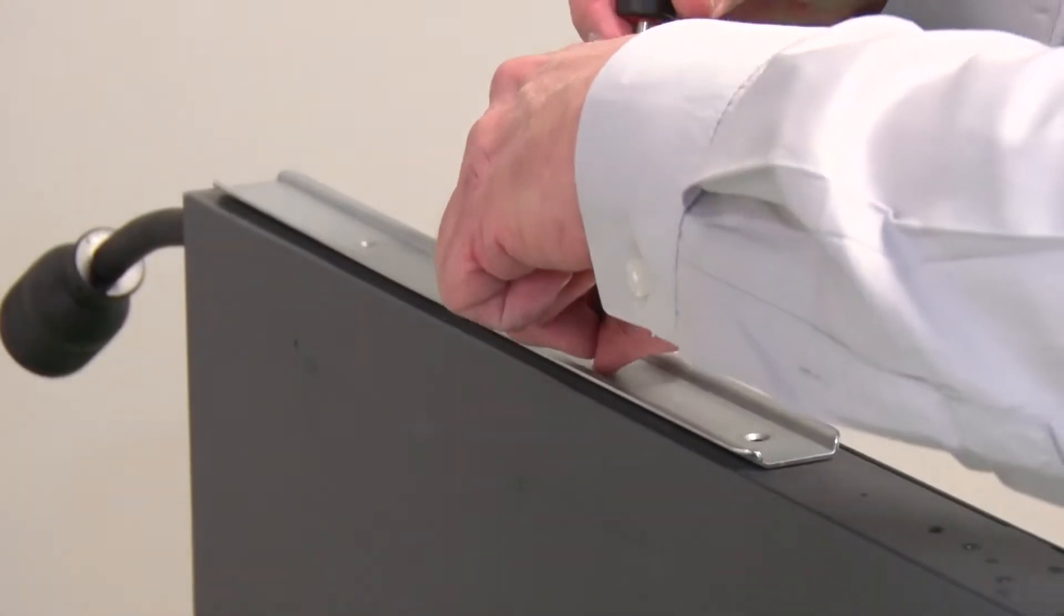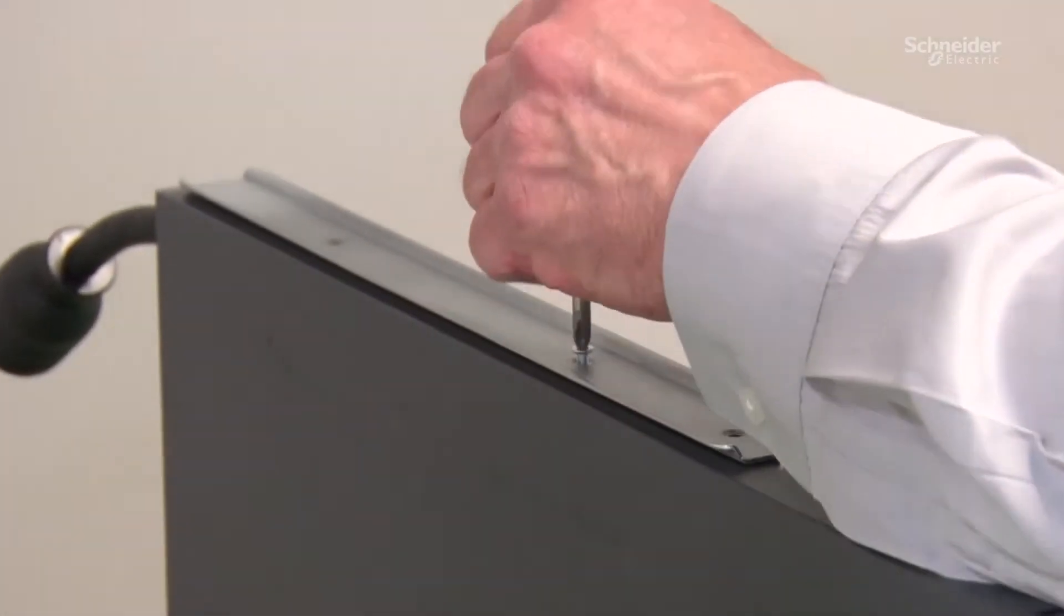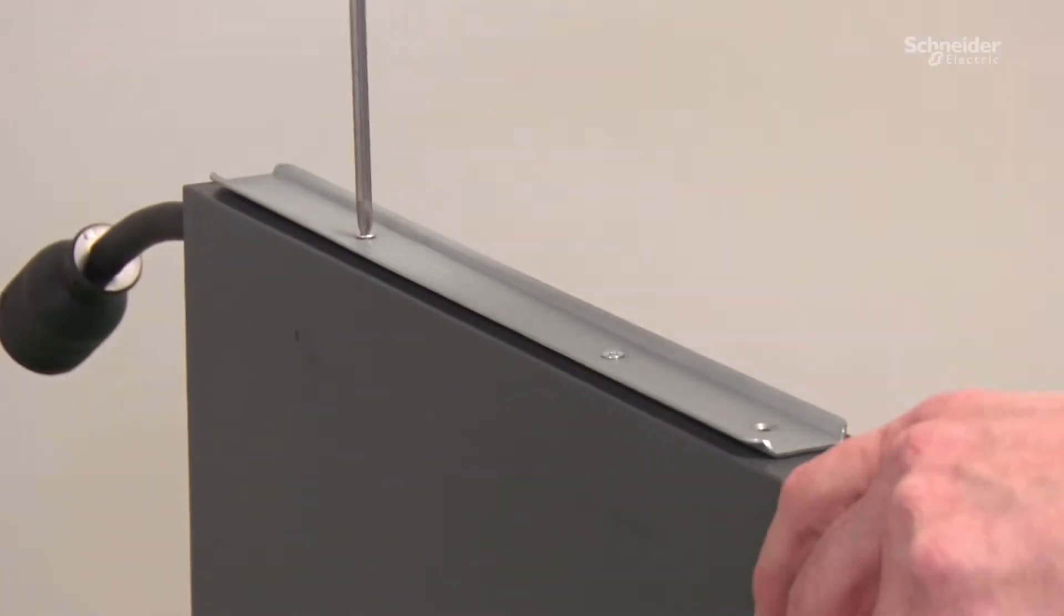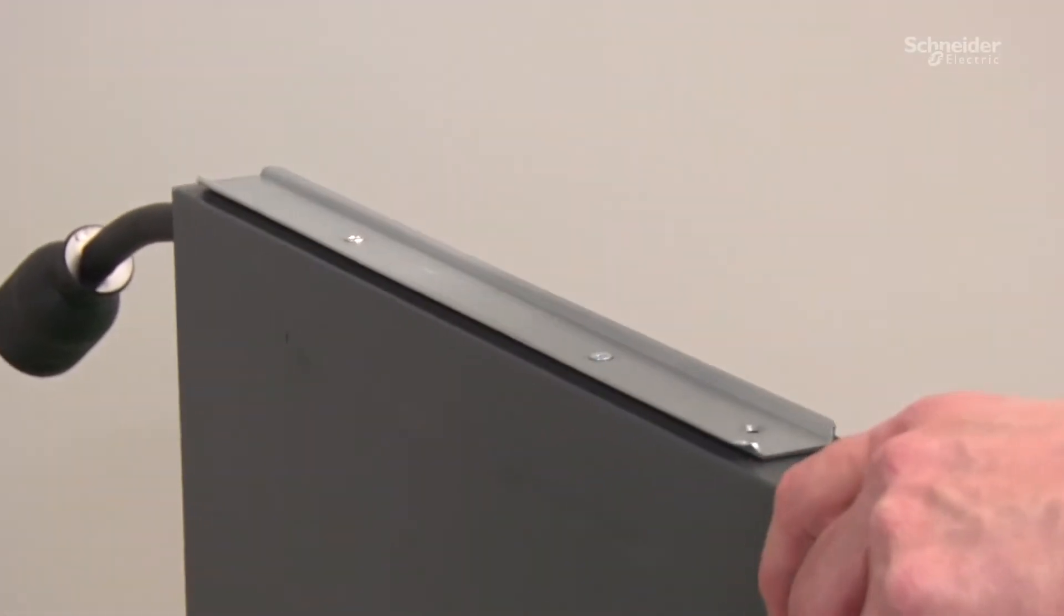First, you have to align the holes on the rail with the holes on the UPS and do that for both sides.